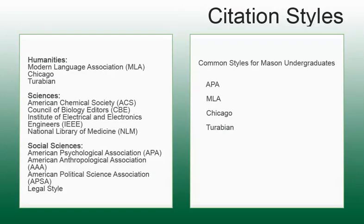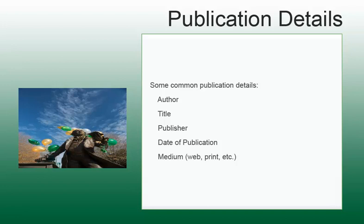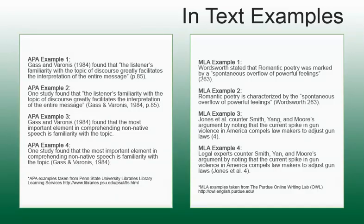There are a number of different citation styles. The subject or discipline you are writing in, or your instructor, dictates the style to use. Each style contains the same basic information — the publication details — but they are organized and arranged differently. Here are examples of in-text citations. Notice the differences in the way the publication details are arranged and ordered, and how they identify someone else's words and ideas.